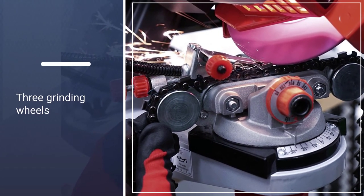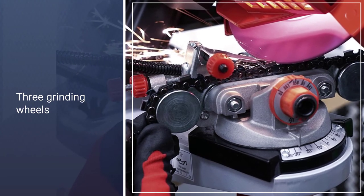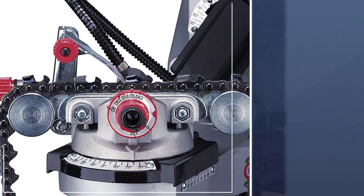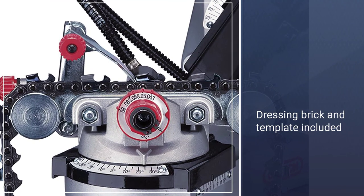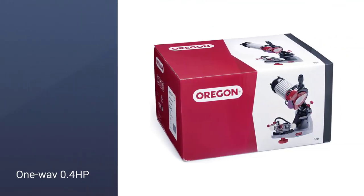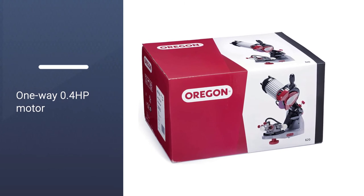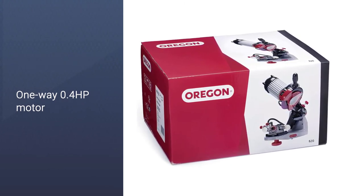This is designed for high volume usage and is compatible with all chains up to 3 quarters pitch with its three grinding wheels. The Oregon 620,120 Chainsaw Sharpeners work quickly and effectively, although there are some concerns around the durability of the depth adjustment screws which have plastic components.